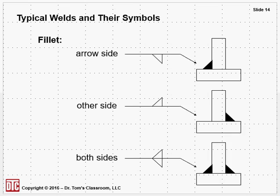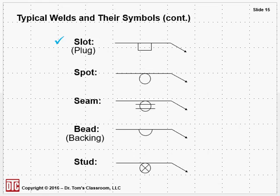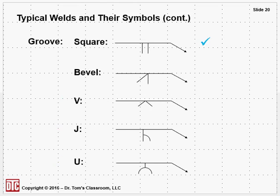Then there's lots of others, and these are the symbols that were used on the download sheet. We've got slot, sometimes it's called the plug. I put them all on the arrow side here. So that's one type - symbol for spot circle, seam circle with two lines, a bead which is also backing, a bead kind of weld on top. So you see both of those words, and then a stud type weld.